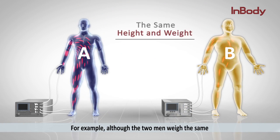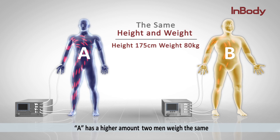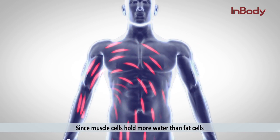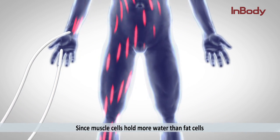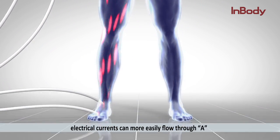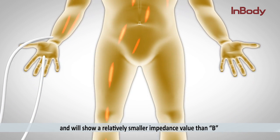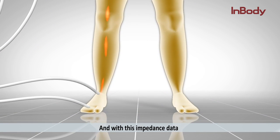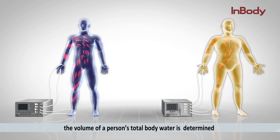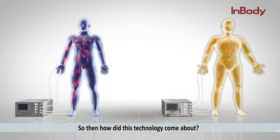For example, although two men weigh the same, person A has a higher amount of muscle mass than person B. Since muscle cells hold more water than fat cells, electrical currents can more easily flow through A, and will show a relatively smaller impedance value than B. With this impedance data, the volume of a person's total body water is determined. So then, how did this technology come about?